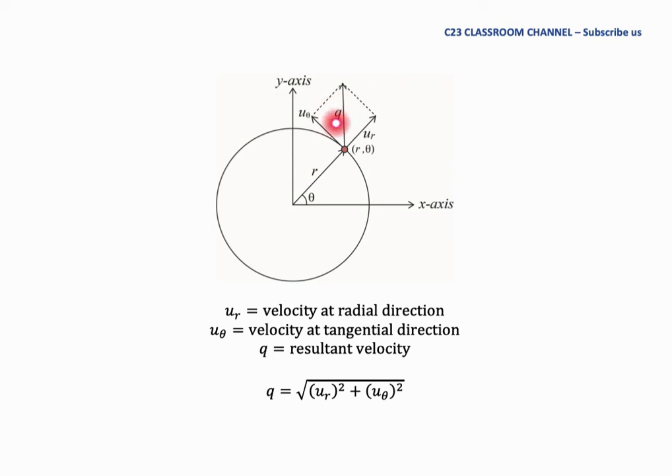...as equal to q here by using this equation, and it is similar with the Cartesian coordinates. So we have q equals square root of u_r squared plus u_θ squared.